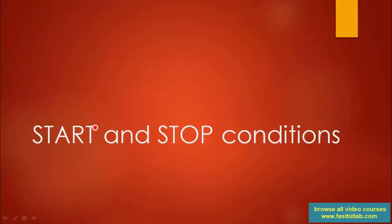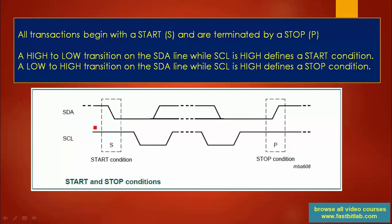In this lecture let's understand start and stop conditions which are generated by the master. Remember that all transactions in I2C begin with a start and are terminated by a stop. Start condition is designated by the letter S and stop condition is designated by the letter P.